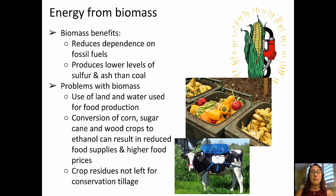Some concerns about biomass are that producing it to burn can use land and water typically used for food production. The conversion of corn, sugarcane, and wood crops to ethanol can result in higher food prices and reduced food supplies. Also, if they're clearing fields, conservation tillage will not take place.